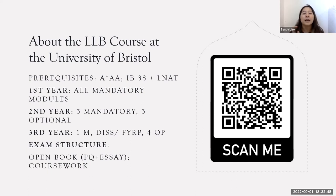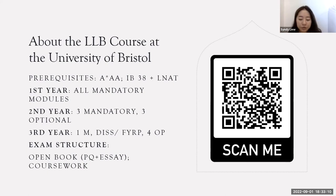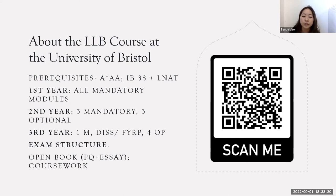In first year you have six mandatory modules: criminal law, contract law, tort law, law in action, law and state, and constitutional rights. In second year you have three mandatory modules — EU law, land law, and jurisprudence — as well as three optional units. In third year you have one mandatory module being trusts, and you can choose between dissertation or a final year research project, plus four optional units.